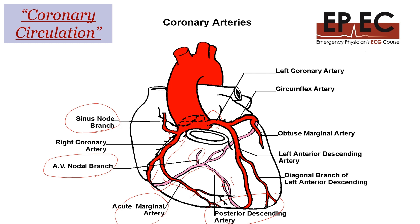Moving to the other side, this is the left main coronary artery, which splits into the LAD — the left anterior descending artery — supplying the anterior wall of the heart, and the circumflex, which supplies the lateral wall of the heart and turns around to share anastomoses with the right coronary to supply the posterior wall and the posterior part of the septum.